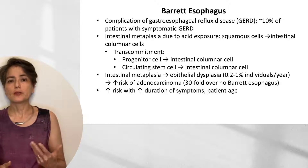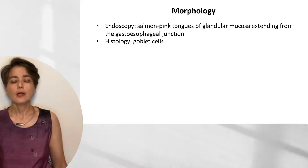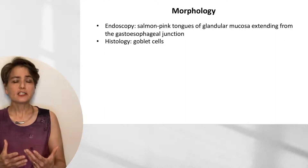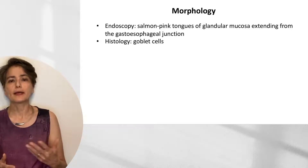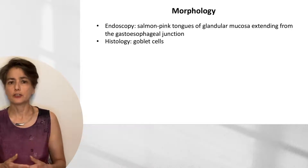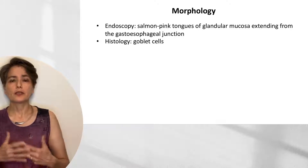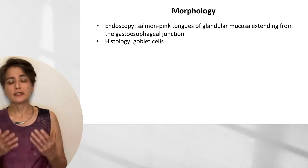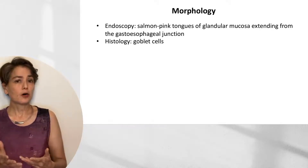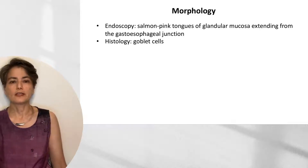There is increased risk with increased duration of symptoms and patient age. On endoscopy, the endoscopist will see salmon-pink tongues of glandular mucosa extending from the gastroesophageal junction, interspersed with tongues of normal squamous mucosa, which has a light pink color. Microscopically, we're going to see goblet cells. Goblet cells belong in the intestine — they don't belong in the stomach, and they don't belong in the esophagus.